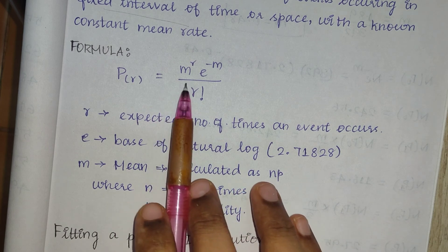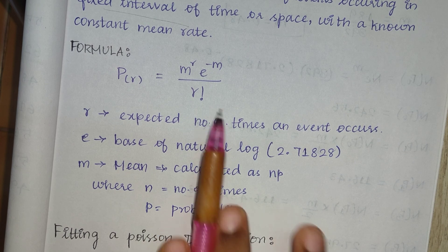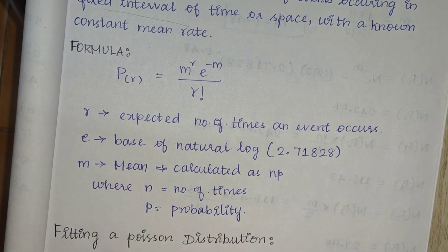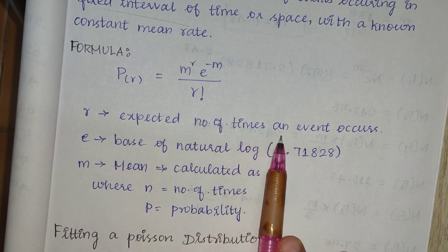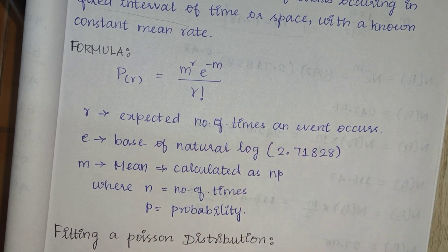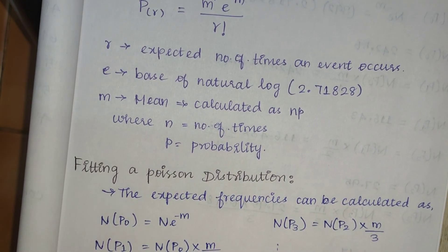The formula for Poisson distribution is: P(r) = m^r * e^(-m) / r! where r is the expected number of times an event occurs — that is, the number of occurrences in the event we have to calculate.